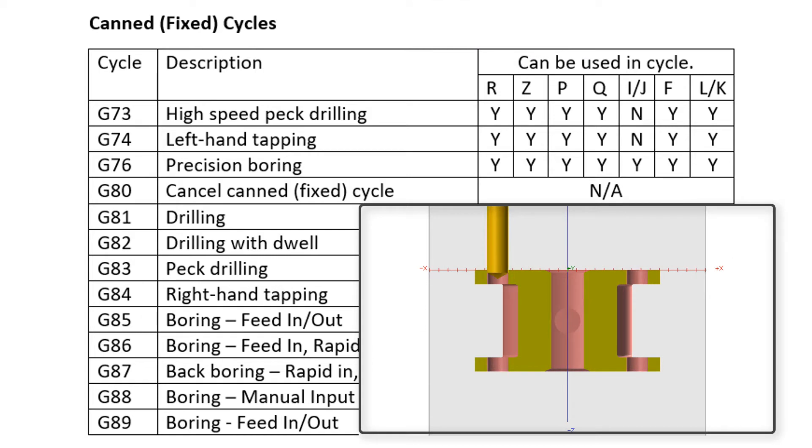The high-speed peck drilling cycle is typically used when the material breaks into small chips such as cast iron, or when long stringy chips are not a concern.